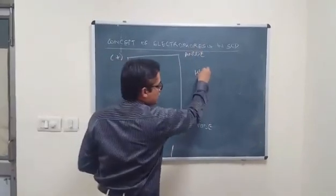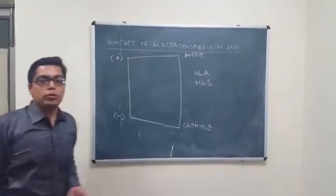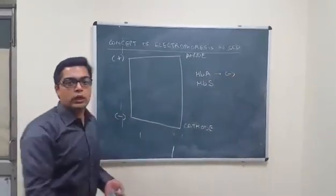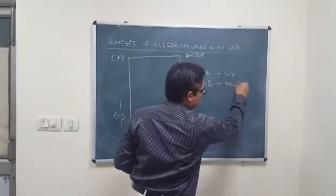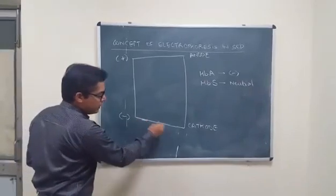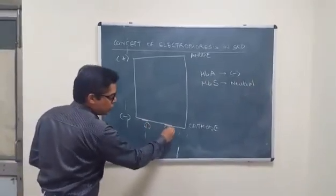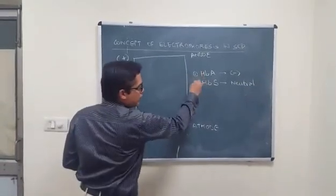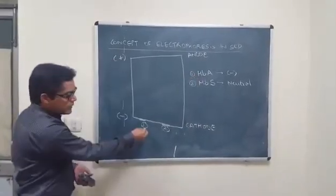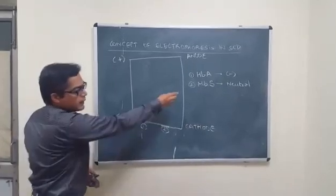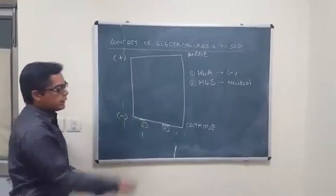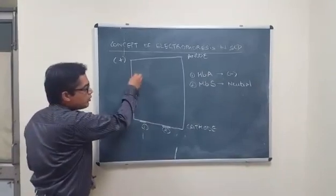Recapping what we discussed: hemoglobin A is more negative because of the presence of glutamic acid, whereas hemoglobin S is neutral. When performing hemoglobin electrophoresis, I place the sample — say sample 1 representing hemoglobin A and sample 2 representing hemoglobin S — on the strip. The negatively charged hemoglobin A is attracted toward the positive pole, resulting in faster migration, and a band forms corresponding to hemoglobin A.